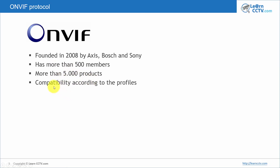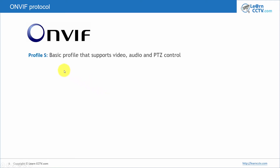The idea is to have compatibility according to profiles. Profile S is basic and supports video, audio, and PTZ control — so you can control your camera remotely using a joystick, just using ONVIF protocol. Profile G supports storage — for example, if you have software and want to record to an SD card using your IP camera and retrieve that information using a different software from a different manufacturer, you use Profile G.